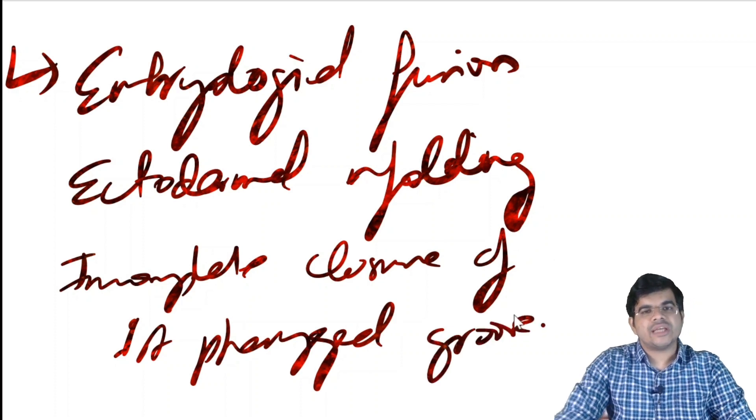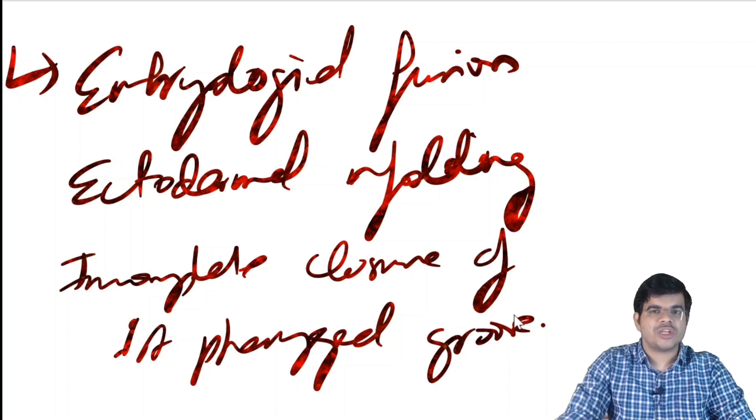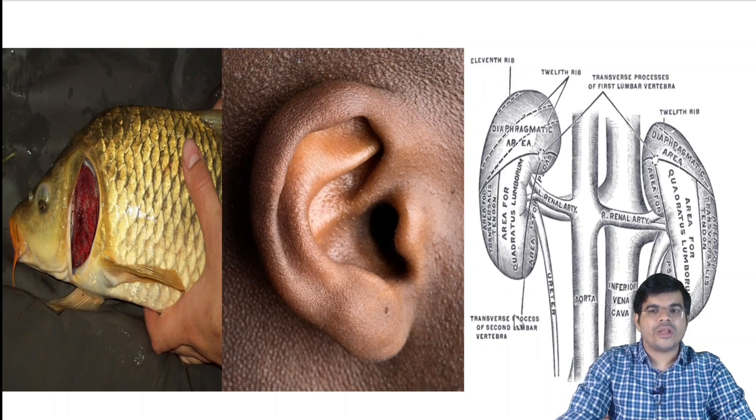Preauricular sinus can be unilateral or bilateral. There may be a strong family history associated with it. It is most often sporadic, but sometimes it is associated with the Branchio-oto-renal syndrome.